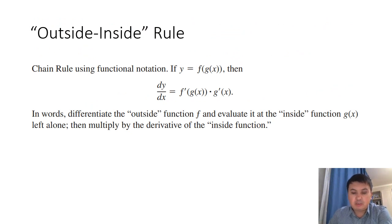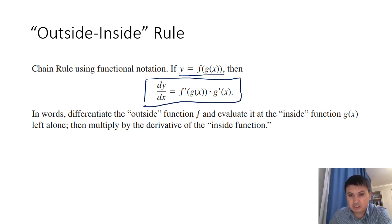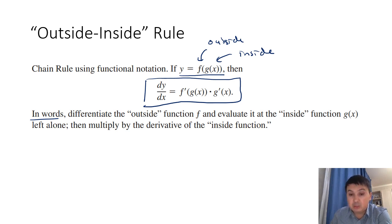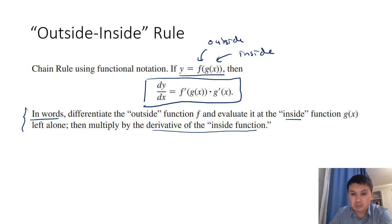In the previous two examples we used Leibniz notation. Now let's try a slightly different approach. Given a composite function y = f(g(x)), the chain rule gives y′ = f′(g(x)) · g′(x). We can regard f as the outside function and g as the inside function. In words: differentiate the outside function, evaluate it at the inside function, then multiply by the derivative of the inside function. If you remember this wording, it becomes very convenient in many cases.